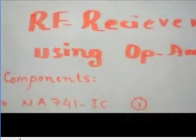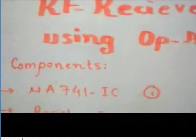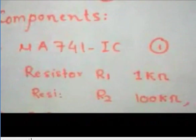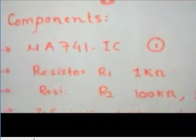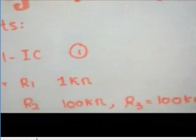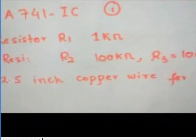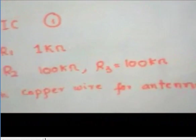For this we need the components: micro A741 IC, one resistor R1 1 kiloohm, resistor R2 100 kiloohm and R3 100 kiloohm, and a 2.5 inch copper wire for the receiving antenna.